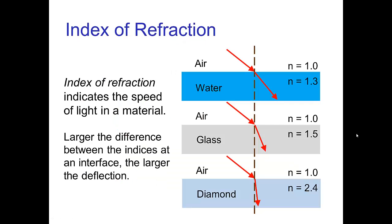If we measure the speed of light in different materials, we can characterize that by what's called the index of refraction. The larger the index of refraction, the slower light travels in that material. For example: water is 1.3, glass is 1.5, and diamond is very high at 2.4. The amount of deflection from refraction depends on the difference between the two indices of refraction — from the material on one side of the surface to the other.